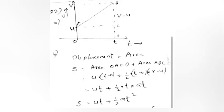Problem 22: (a) Draw velocity time graph for uniformly accelerated motion. (b) From the graph, arrive at the equation for displacement.